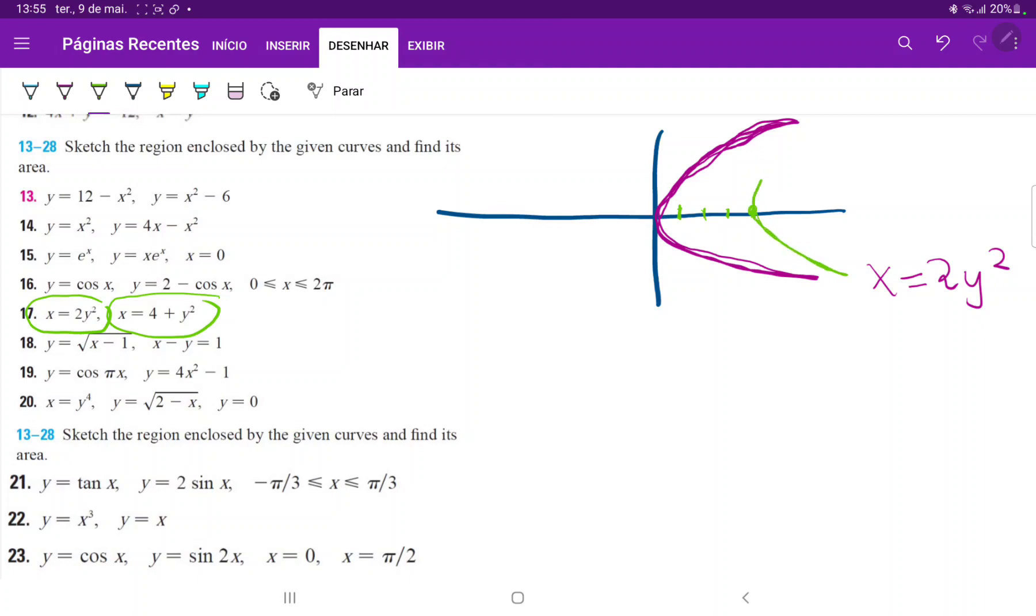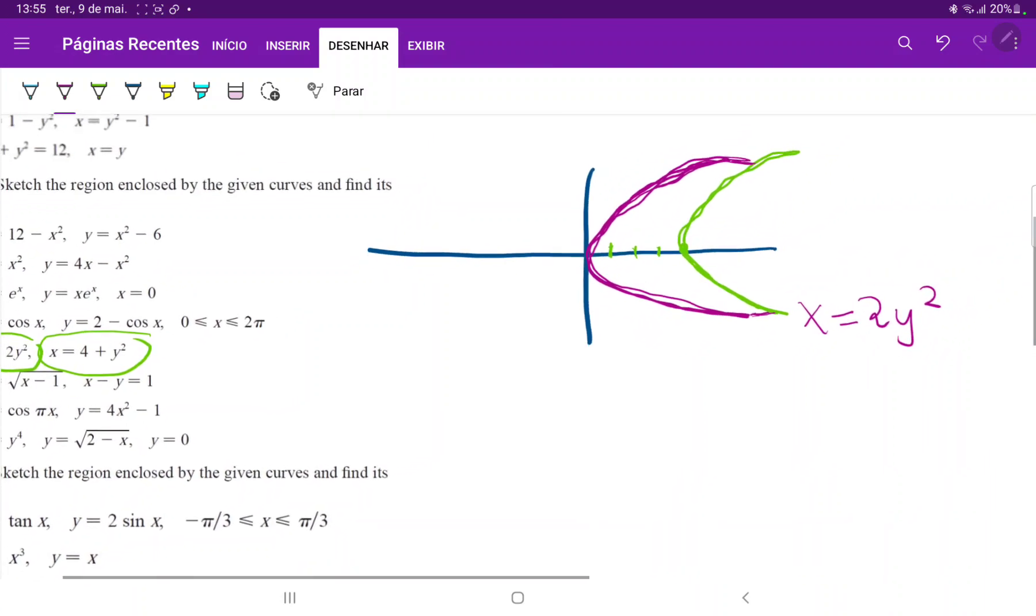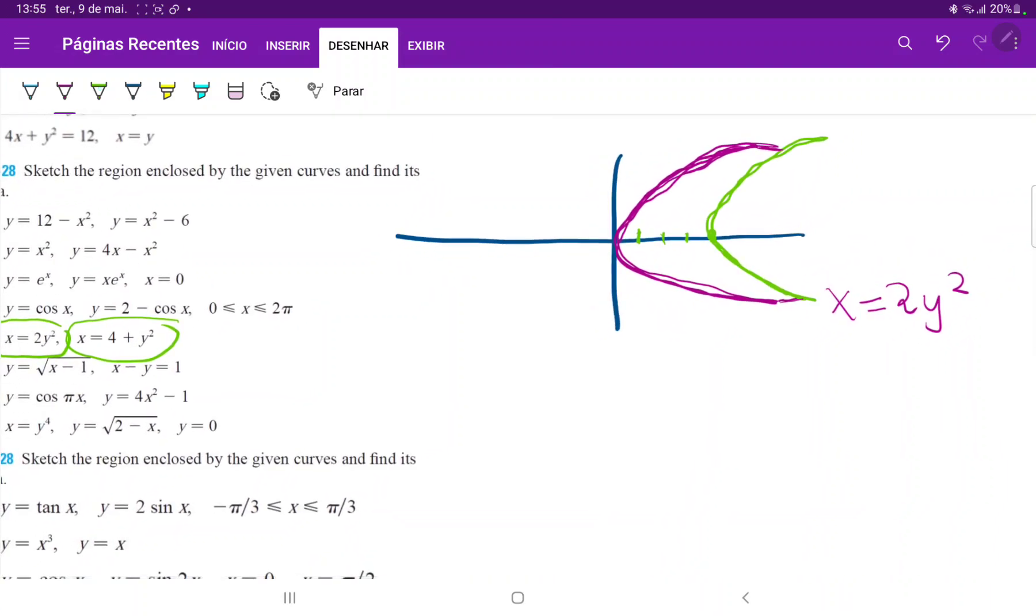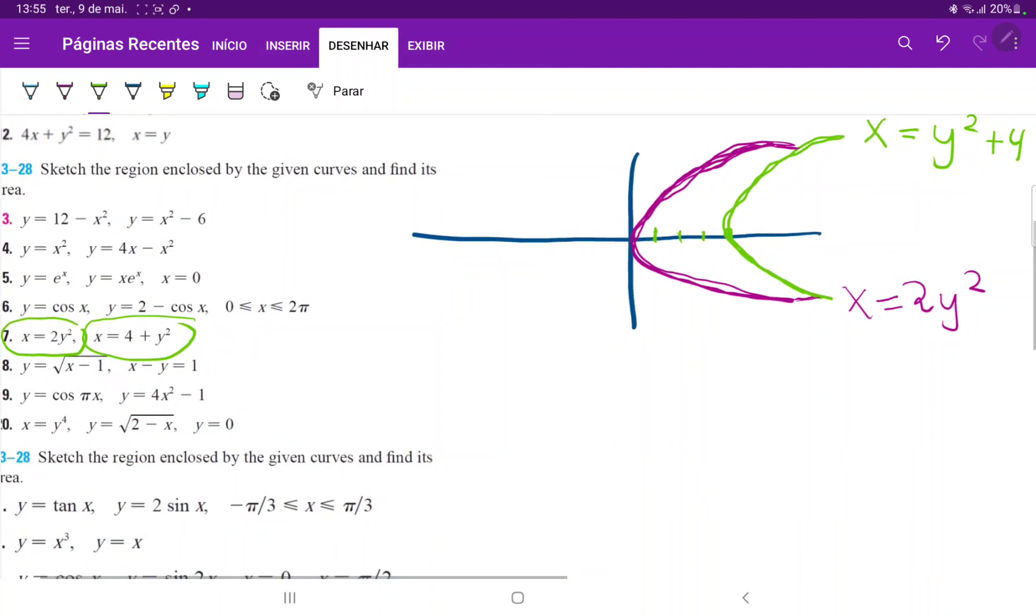So it should go about here. And let us just draw this intersection in a better way. So this one, the one in green is x is equal to y squared plus four. And we can see that their intersection, the area between them, is this part over here.